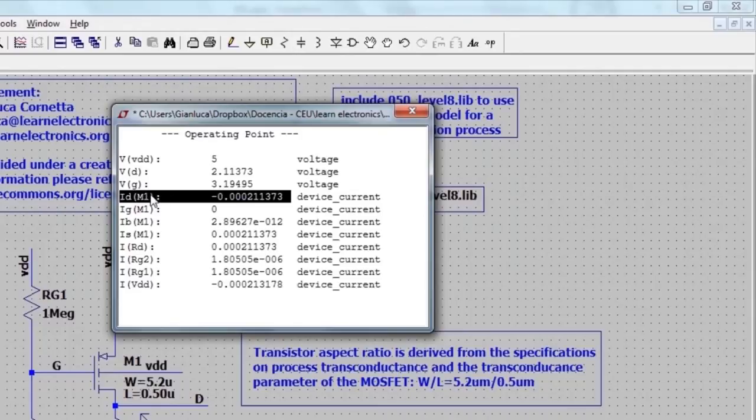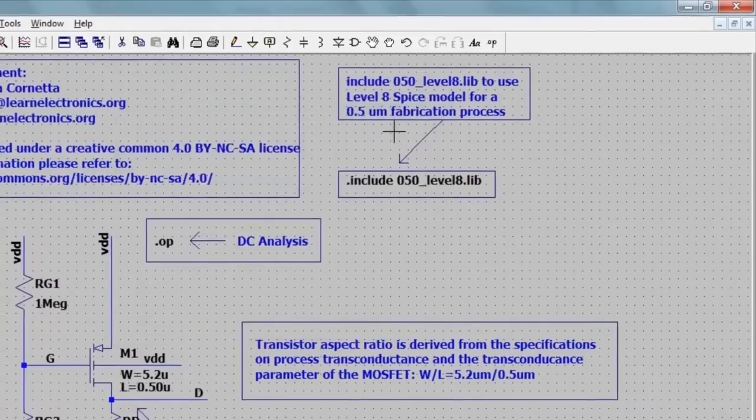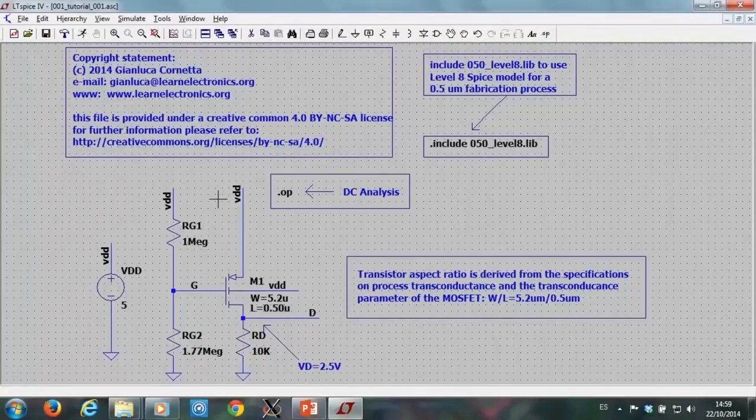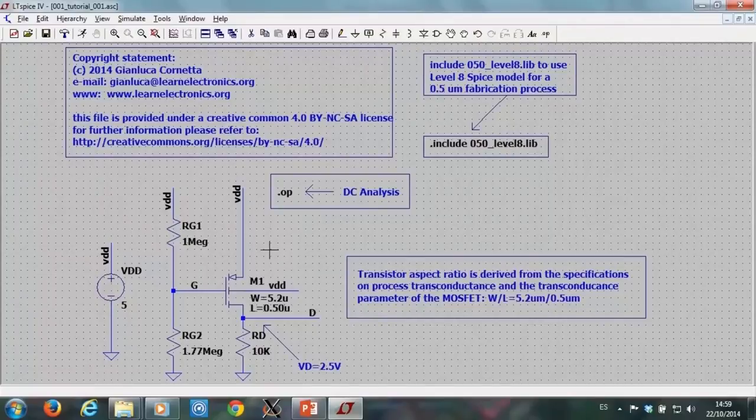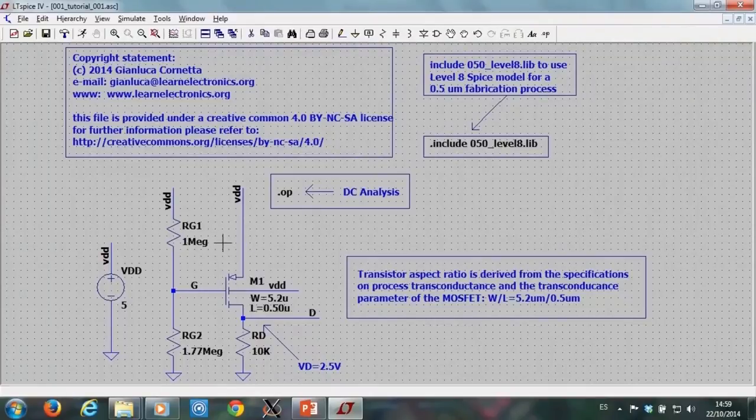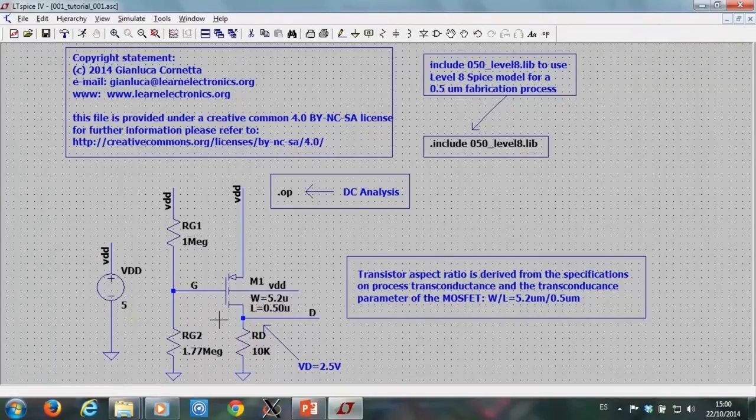The values I obtained are a little bit smaller than my target value. This is because I used for my estimation a level 1 model for a short channel transistor. If I want, I may fine-tune my design to reach the target value. For example, to increase the drain current, I may increase the overdrive voltage.